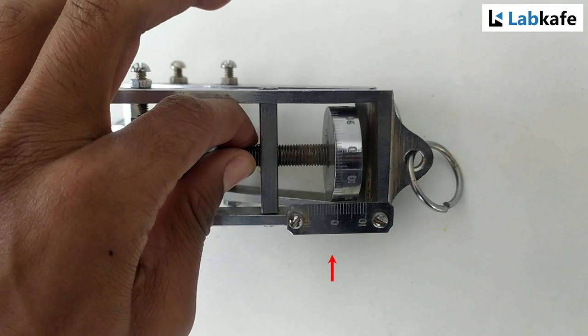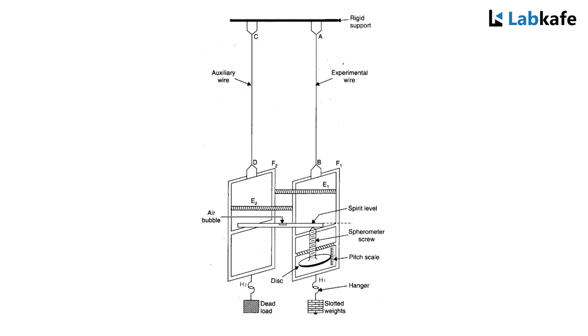The micrometer screw has a disc having 100 equal divisions along its circumference. A linear scale or pitch scale is attached vertically.